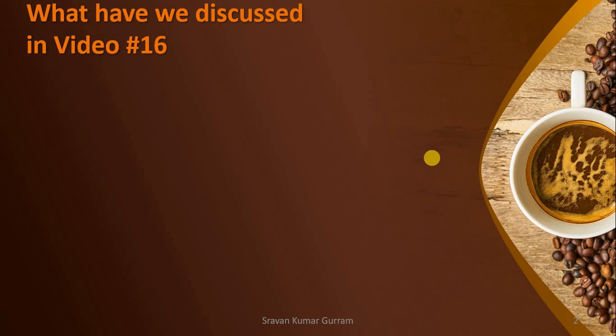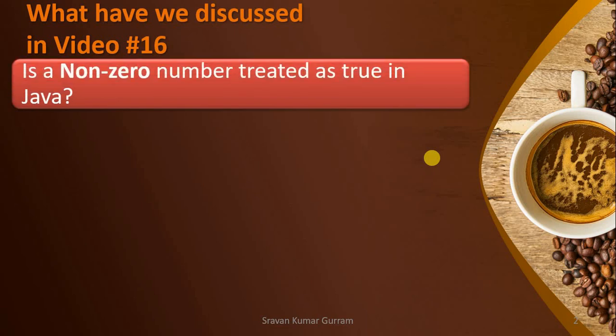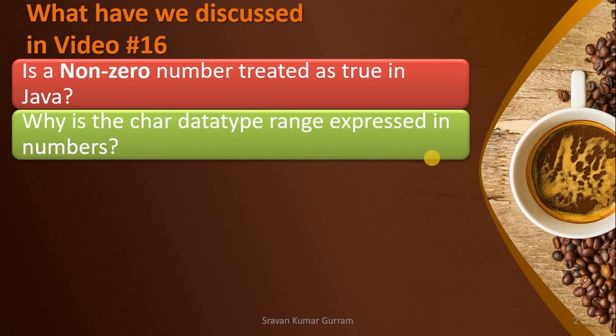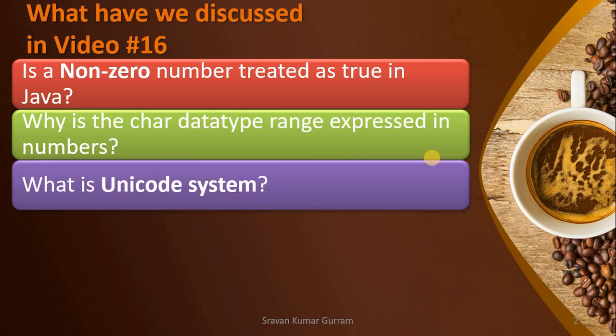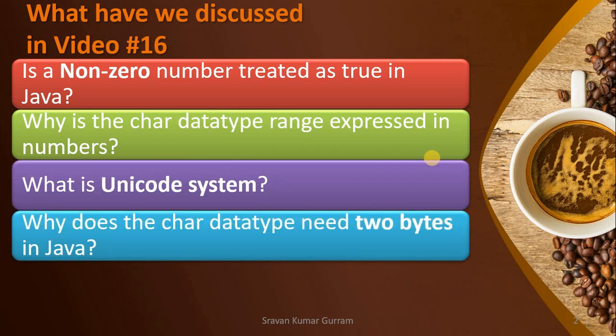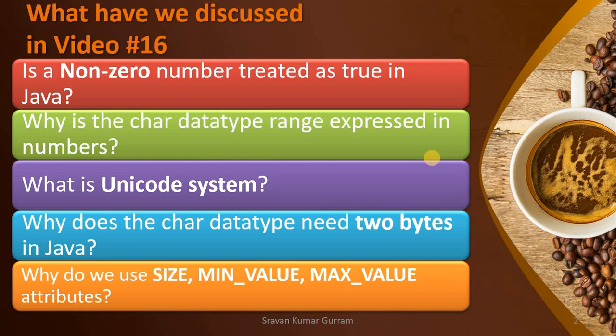Before we start today's session, let us try to recall what we discussed in our last video. Is a non-zero number treated as true in Java? Why is the character data type range expressed in numbers? What is Unicode system? Why does the character data type need 2 bytes in Java? Why do we use size, minimum value, and maximum value attributes? All these are covered in detail in the last video. If you didn't watch that, please watch it — the link is given in the description box.